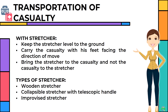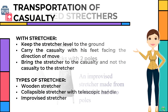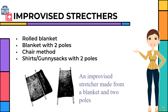Transportation of casualty: if you are transporting with a stretcher, keep the stretcher level to the ground. Carry the casualty with his feet facing the direction of movement. Bring the stretcher to the casualty and not the casualty to the stretcher. Types of stretcher include: wooden stretcher; collapsible stretcher with telescopic handle; and improvised stretcher. Improvised stretchers can be made from a rolled blanket, a blanket with two poles, a chair, shirts, or gunny sacks with two poles.